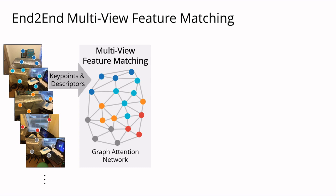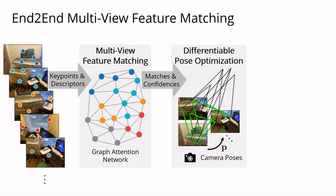This way, the receptive field spans across all images to produce globally informed matching solutions. The resulting matches and confidences serve as weighted constraints in a differentiable pose optimization.